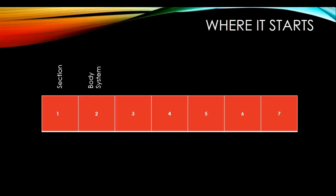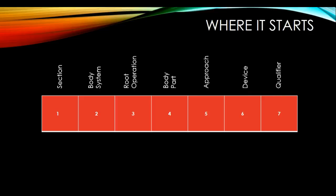Digit number two identifies the body system. Digit number three indicates the root operation. Digit number four identifies the body part. Digit number five tells us the approach. Digit number six tells us the device, if any, that was used. And digit number seven tells us the qualifier, if any, that's applicable.